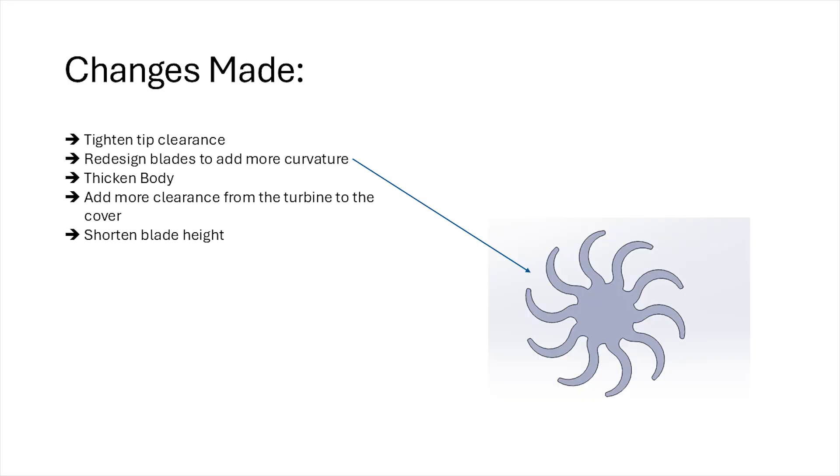Putting it all together, for the redesign of our first prototype, we'll start by tightening the tip clearances, making the curve a little more aggressive to capture more momentum. I'll thicken the body to prevent warping, and we'll add more clearance from the turbine top to the cover. We can also shorten the blade height, and this might reduce the wobble.